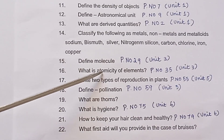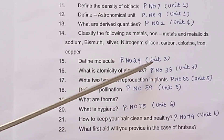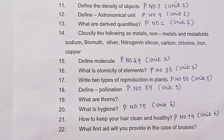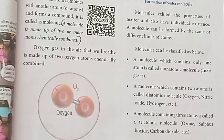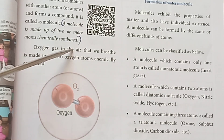Question 15: Define molecule. Page number 29, Unit 3. Answer: A molecule is made up of 2 or more atoms chemically combined.